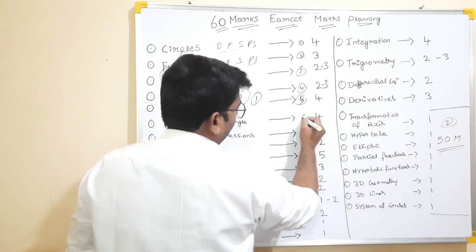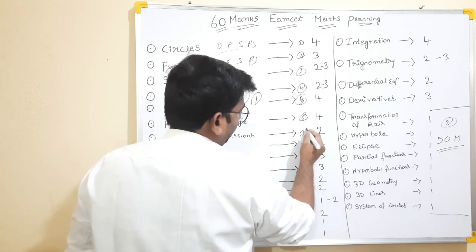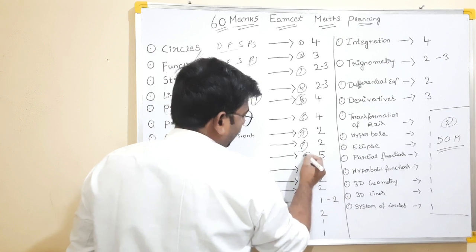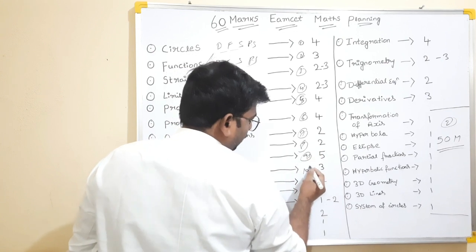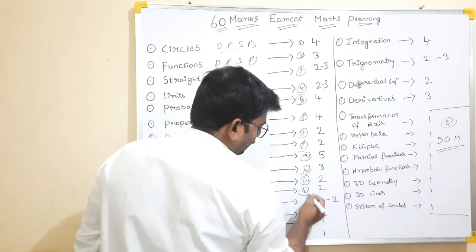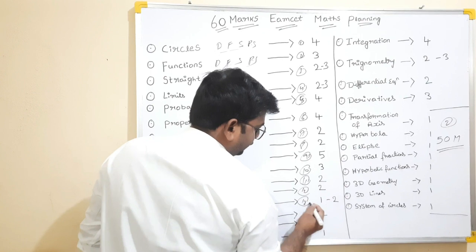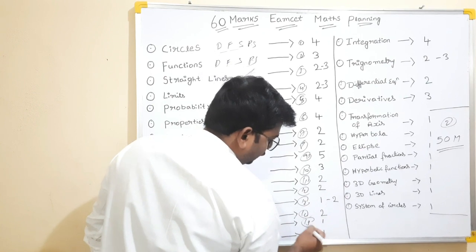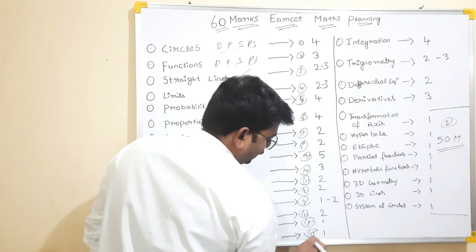These are 2nd priority, this is 3rd priority, and it is 4th priority, 5th priority, 6th priority, 7th priority, 8th priority, 9th priority, 10th priority, 11th priority, 12th priority, 13th priority, 15th priority, 16th priority.